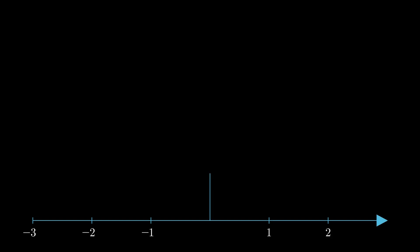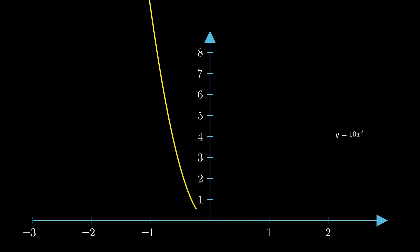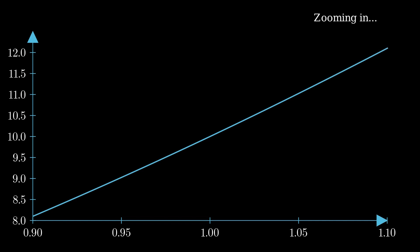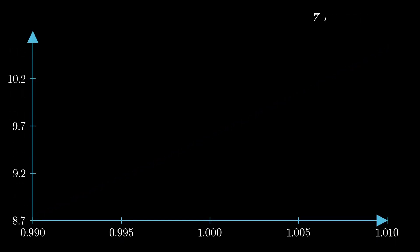In classical calculus, we love smooth functions. We can find tangents, calculate derivatives, and predict future values. Here's a smooth curve like we saw earlier. Zooming in, it starts to look almost straight, with a clear slope we can calculate. Even closer, the smooth curve is practically a line — perfect for classical calculus.